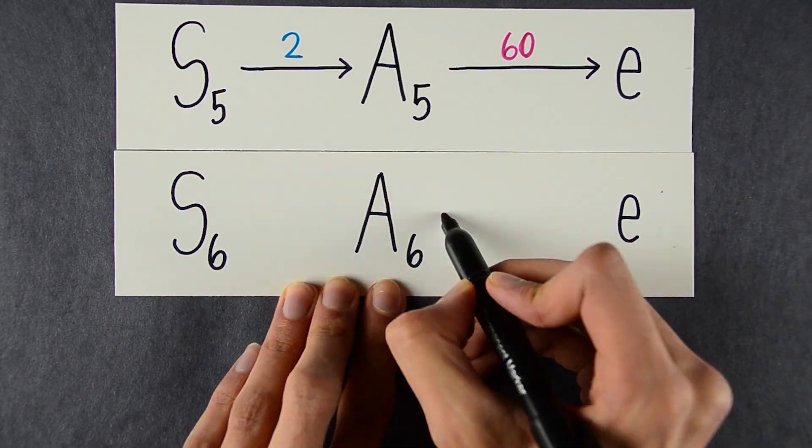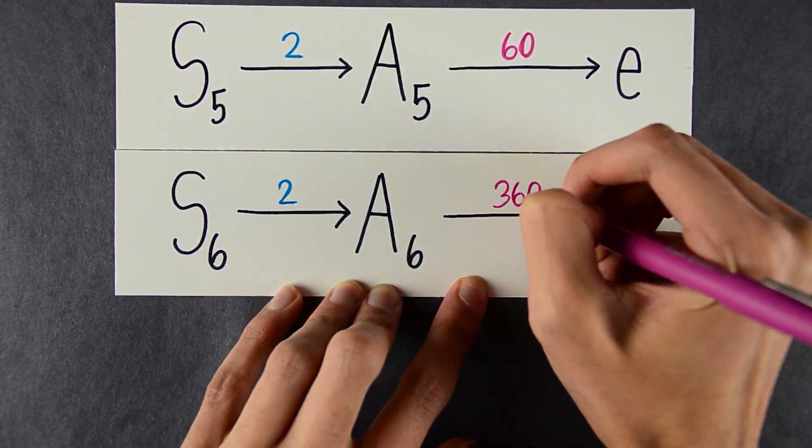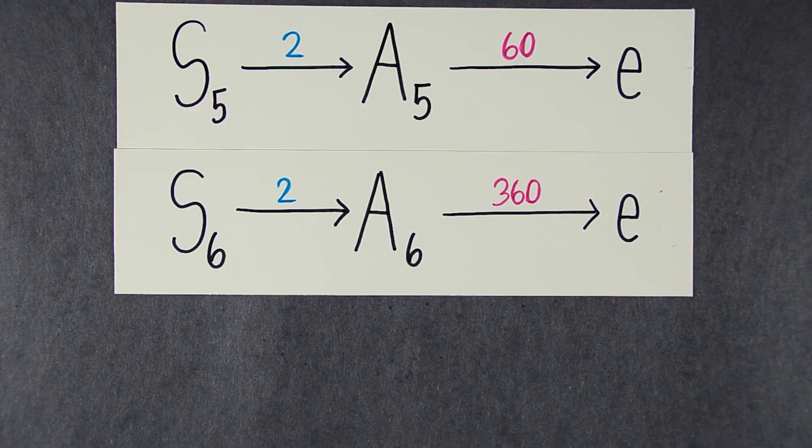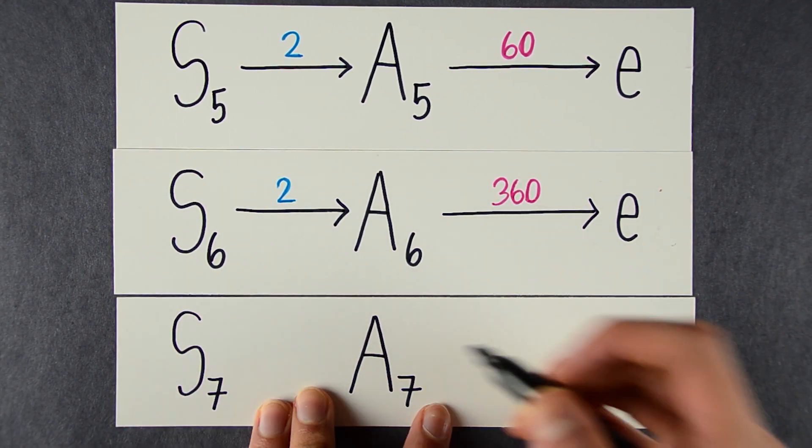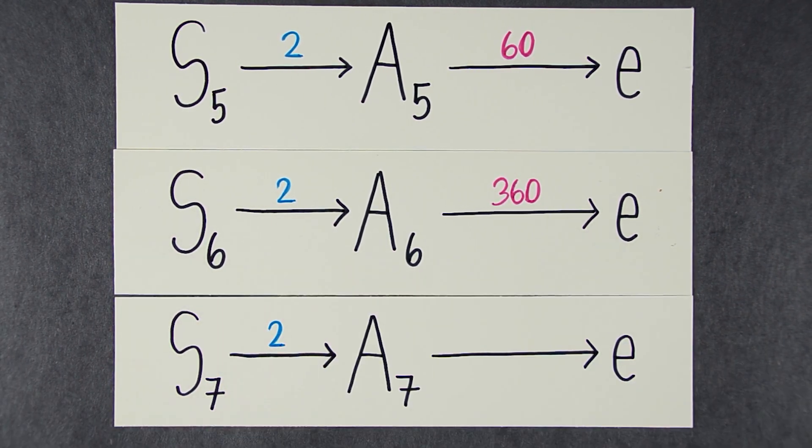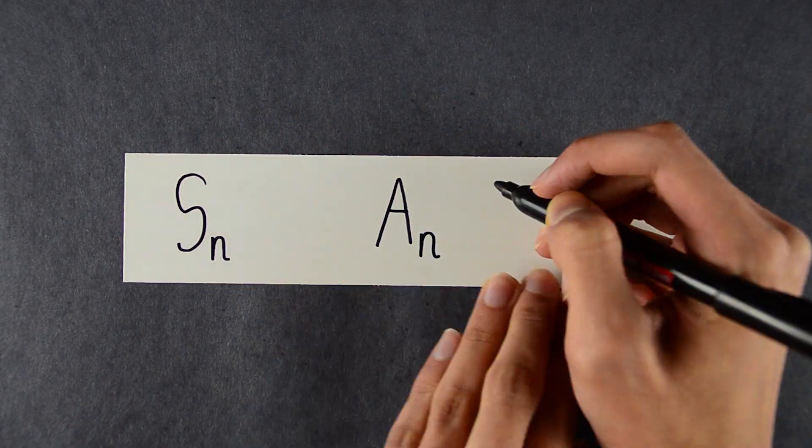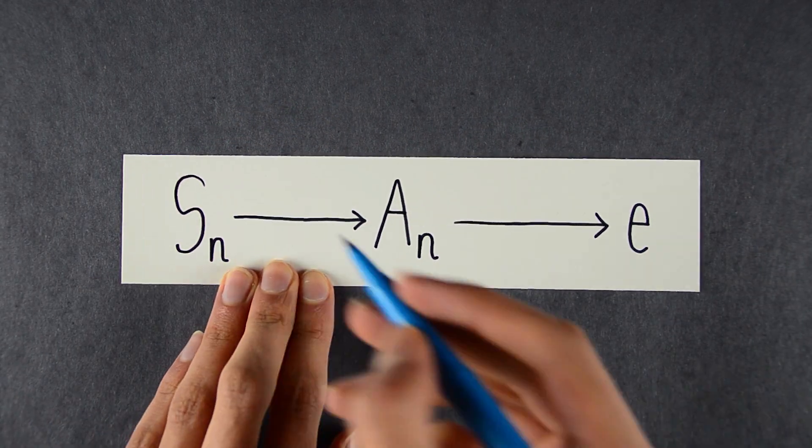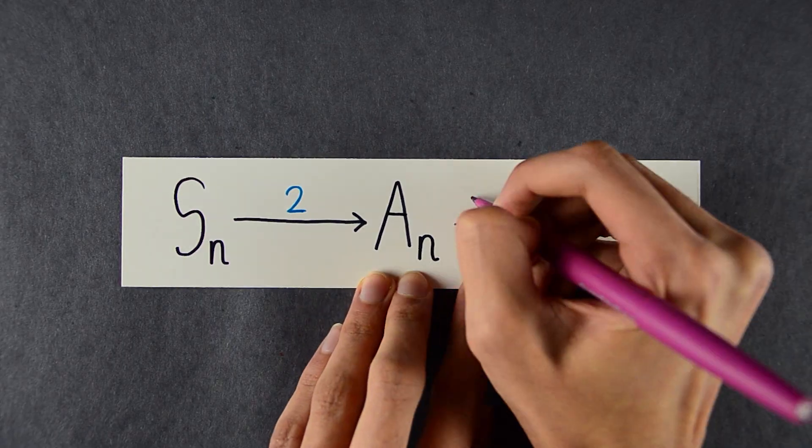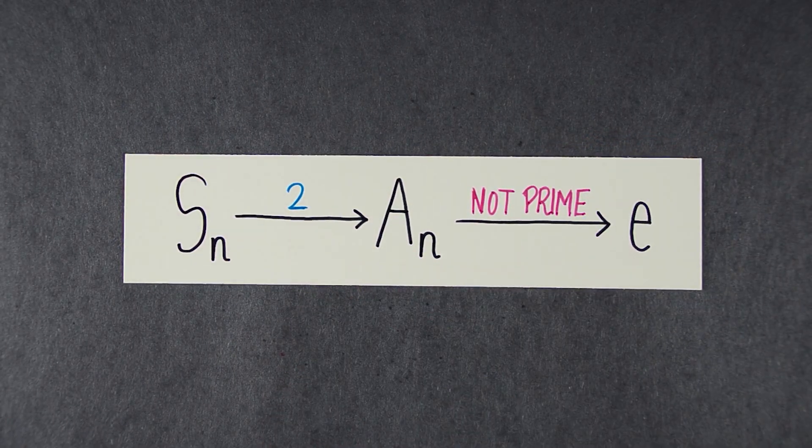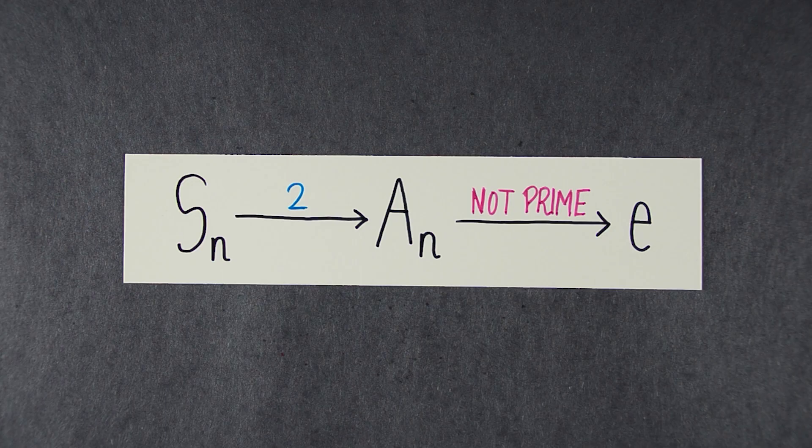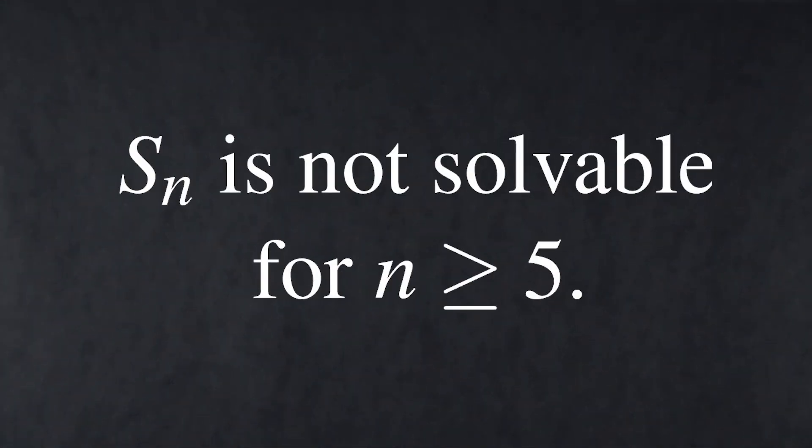For n equals 6, the situation continues. You start off with 2, but then you go to 360. So the group isn't a solvable group. So there's no general formula there either. Same for n equals 7. You start off with 2, but then you get stuck at 2520, which isn't prime. No general formula. In fact, you can prove that for n equals 5 and up, the situation always happens. You always get 2 at the start, but the number you have after is never prime. So that's why for degree 5 and up, there's no general formula. Sn is not solvable for n greater than or equal to 5.